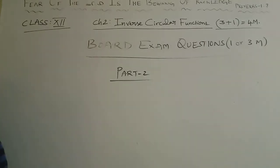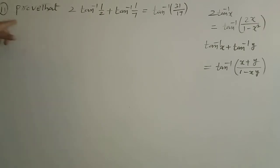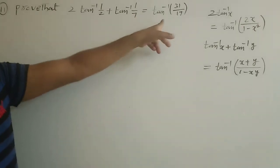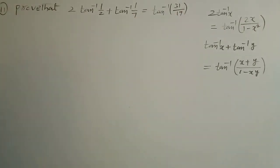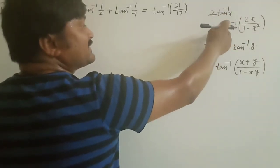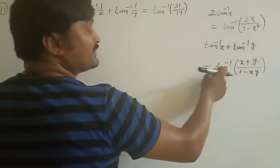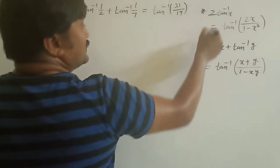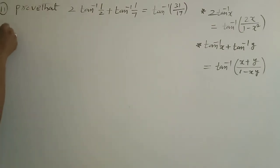Let's move on to problem number 11. Prove that 2tan⁻¹(1/2) + tan⁻¹(1/7) is equal to tan⁻¹(31/17). The formulas to use are: 2tan⁻¹x = tan⁻¹(2x/(1-x²)), and tan⁻¹x + tan⁻¹y = tan⁻¹((x+y)/(1-xy)). You have to remember these two formulas before starting this problem — the solution is very simple.